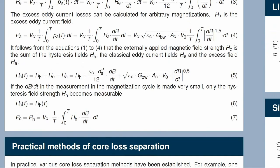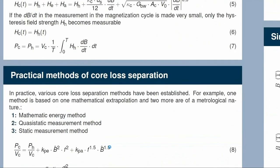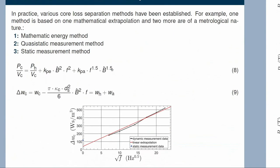Under the condition that dB/dt goes to zero, it is possible to directly measure the hysteresis losses. In the state of the art there are three methods to perform this loss separation. The first is a mathematical method where you measure the energy difference — you take the measured core loss density and subtract the classical eddy current part under sinusoidal conditions.